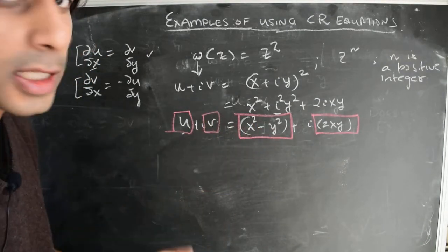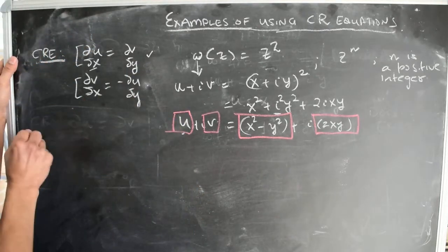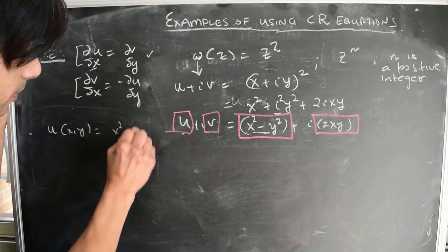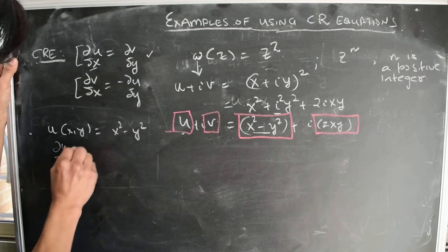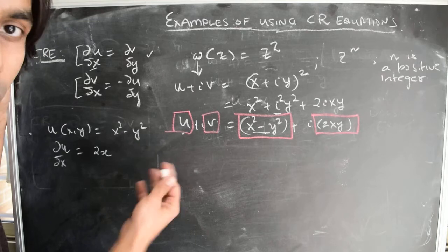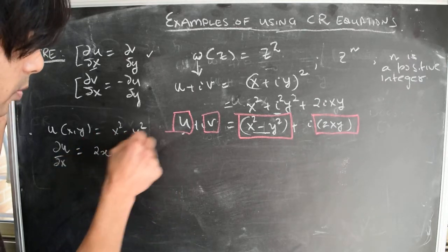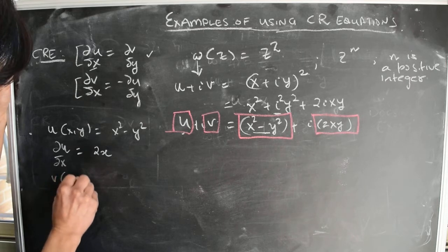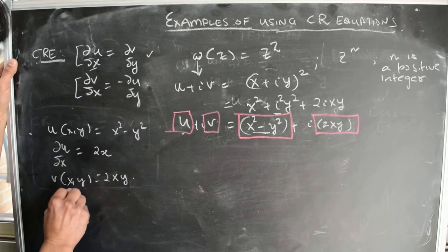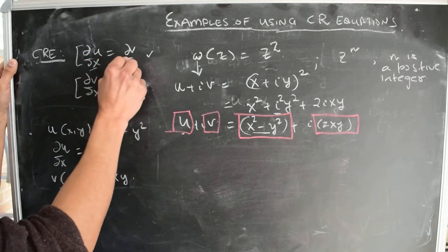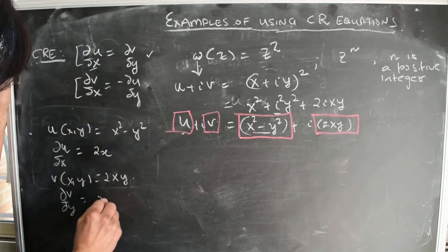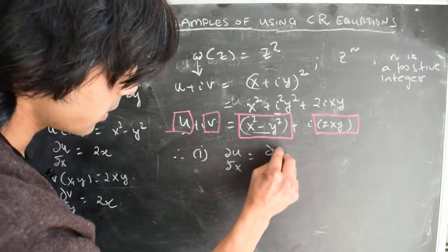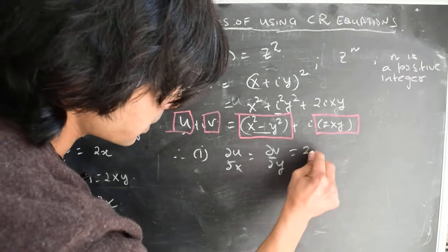Let's check whether these functions satisfy the Cauchy-Riemann equations. The first thing we need to check is ∂U/∂X. Since U = x²-y², the partial derivative of U with respect to X is simply 2X. And since V = 2xy, the partial derivative of V with respect to Y is also 2X. Therefore, the first Cauchy-Riemann condition that ∂U/∂X = ∂V/∂Y is satisfied, because both equal 2X.